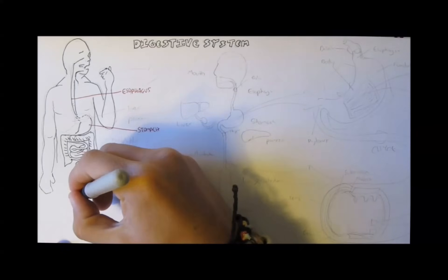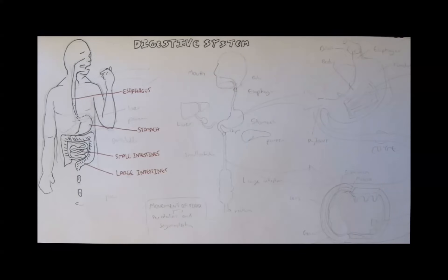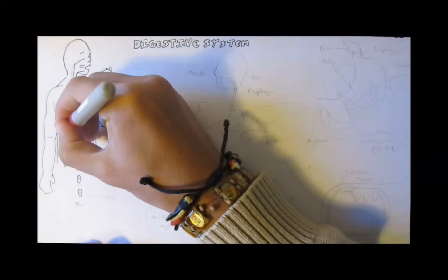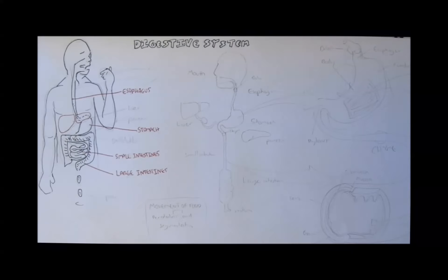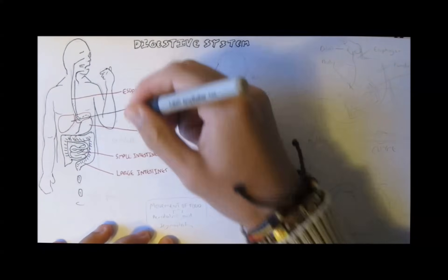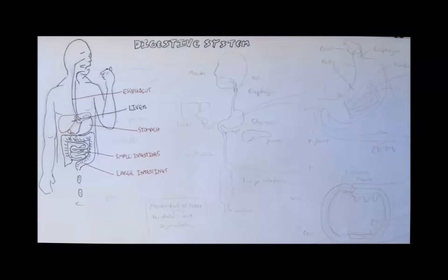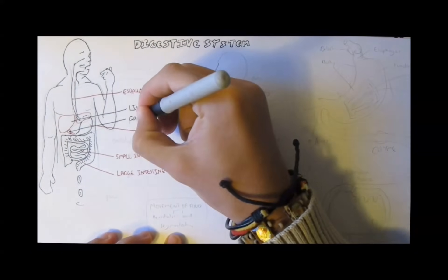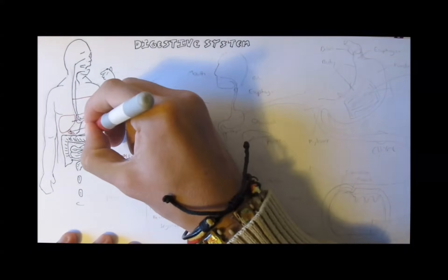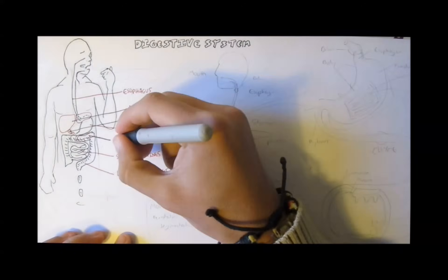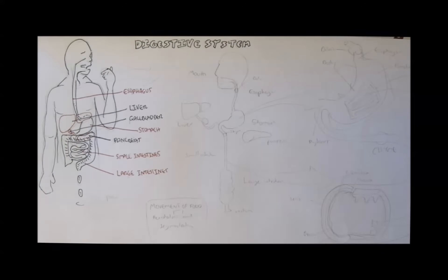And now there are accessory organs, secondary organs associated with the gastrointestinal tract. They are not actually part of this hollow tract, but secrete important enzymes and substances that help with digestion of food. And these are the liver, the gallbladder, and the pancreas. And these secondary organs are very important for digestion.